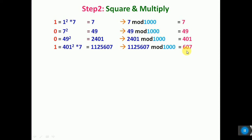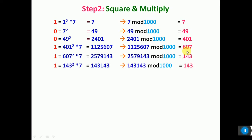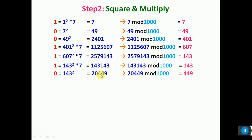The next bit is 1. So 607 squared into the base value 7, under modulo 1000, and you get 143 as a remainder. The next bit is 1: 143 squared into base value 7, and under modulo 1000 it is 143. The next bit is 0. Since it is 0, you just have to square — that is 143 squared, you don't have to multiply with the base value. 20,449 under mod 1000, the remainder is 449.